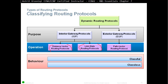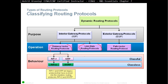Classful routing uses class boundaries like Class A /8, Class B /16, Class C /24. Classful protocols are RIP version 1, a legacy protocol, and IGRP, which is not even supported in most routers now. Then we have classless routing protocols, which are RIP version 2 — the enhanced version of RIP version 1 — and EIGRP, which is the enhanced version of IGRP. RIP stands for Routing Information Protocol; EIGRP stands for Enhanced Interior Gateway Routing Protocol. RIP version 1 and IGRP have evolved into the classless protocols RIP version 2 and EIGRP.